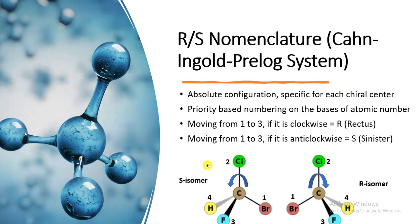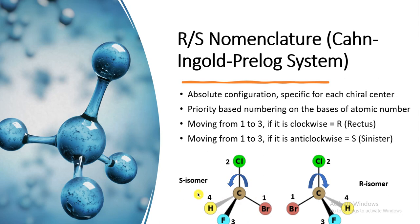RS nomenclature, or the Cahn-Ingold-Prelog system, was proposed by Cahn, Ingold, and Prelog. It gives the absolute configuration at each chiral center, based on numbering atoms attached to the chiral center by their atomic number. Moving from 1 to 3, if clockwise, the configuration is R (from rectus); if anti-clockwise, it is S (from sinister). For example, with bromine assigned 1, chlorine 2, fluorine 3, and hydrogen 4: if moving from 1 to 3 is clockwise, it is the R isomer; anti-clockwise gives the S isomer. The fourth-priority group must be positioned behind.